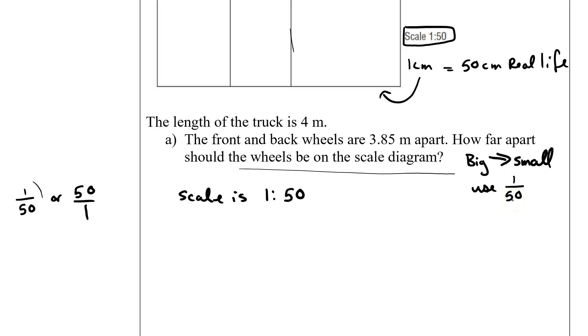Why? Because 1 fiftieth is less than 1, whereas 50 over 1 is greater than 1. So we would take our scale factor and we would multiply it by our dimension.